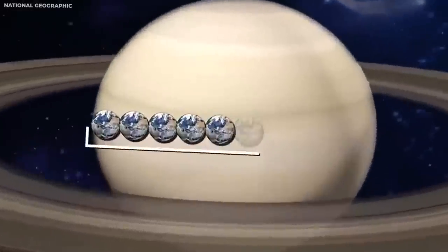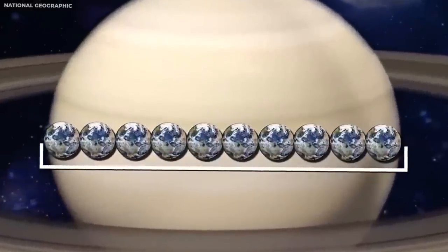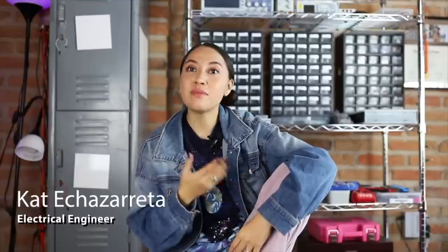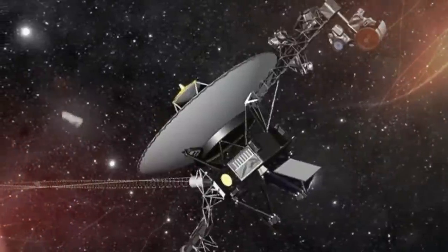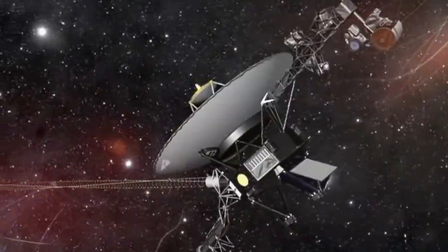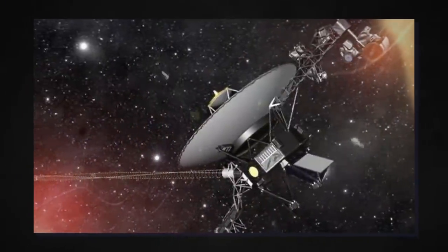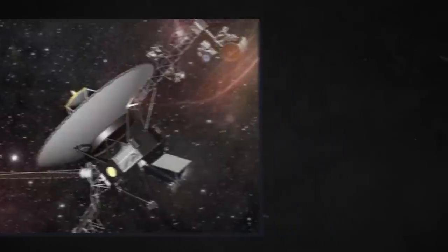Saturn, however, takes only 10.7 hours to completely rotate on its axis. In May this year, NASA engineers confronted a peculiar problem. Voyager 1 had started sending jumbled and unusual data, instead of the telemetry facts that one has come to expect from the spacecraft.